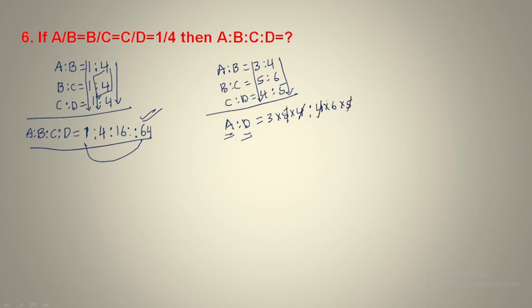Cancel 4-4, cancel 3 to 3 — that is 2 times. So the final answer comes out to 1 is to 2. If you write the steps: 5-5 cancel, 4-4 cancel, so 3 remains — 3 one time to 3 two times. Direct answer is 1 is to 2. There is no need to calculate everything step by step; take this shortcut directly.